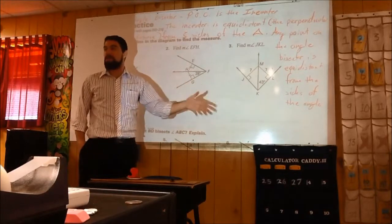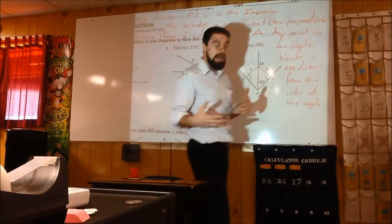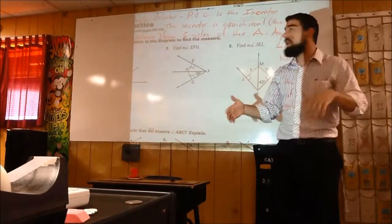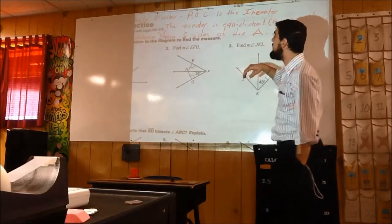It's an angle bisector — a ray, line, or segment that bisects an angle. That's pretty self-explanatory.